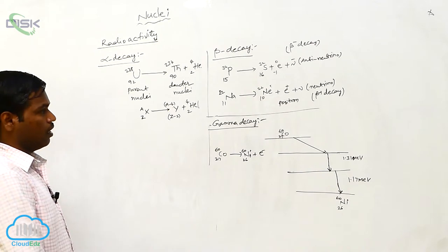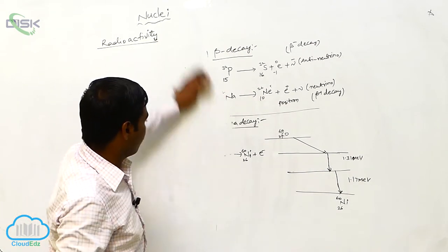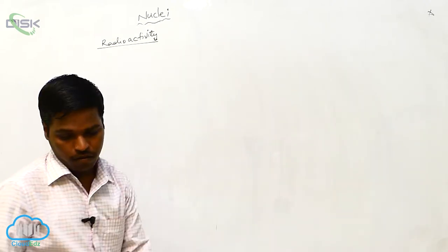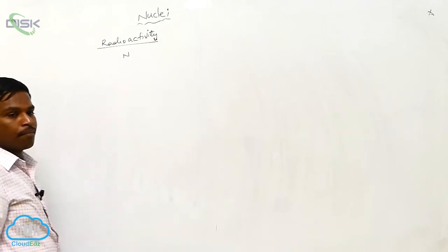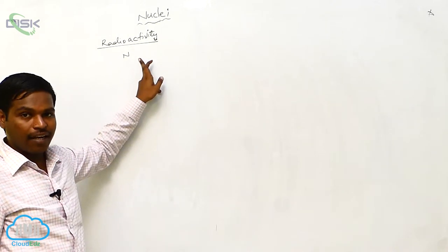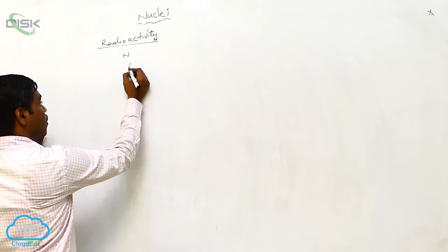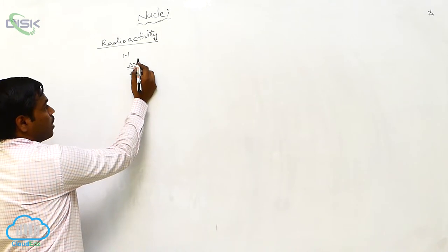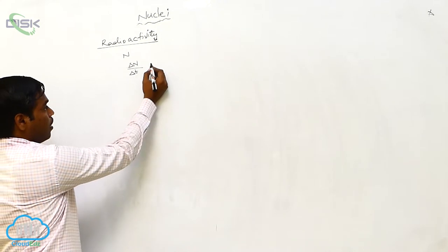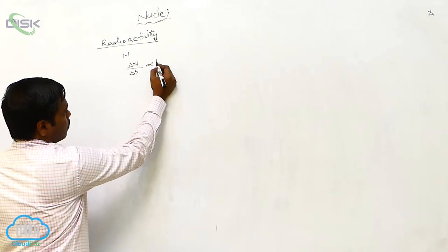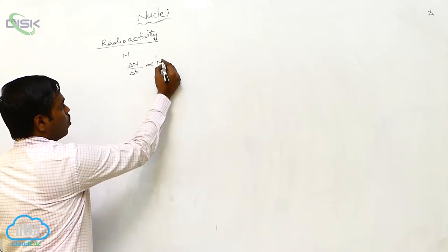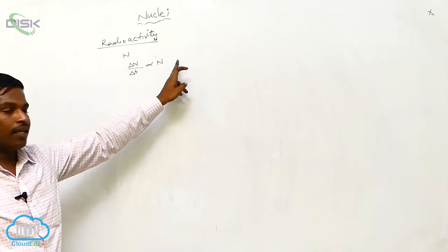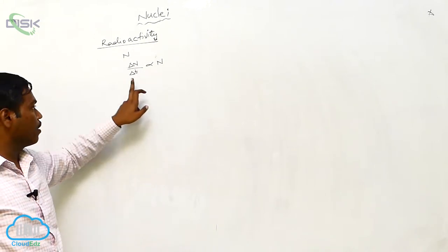These are the three types of decays. Now for radioactivity, we have to find the equation for the half-life period and decay. Here, N is the total number of nuclei. In this N number of nuclei, delta-N number of nuclei are decaying in time delta-T. Delta-N by delta-T is proportional to the total number of nuclei N.